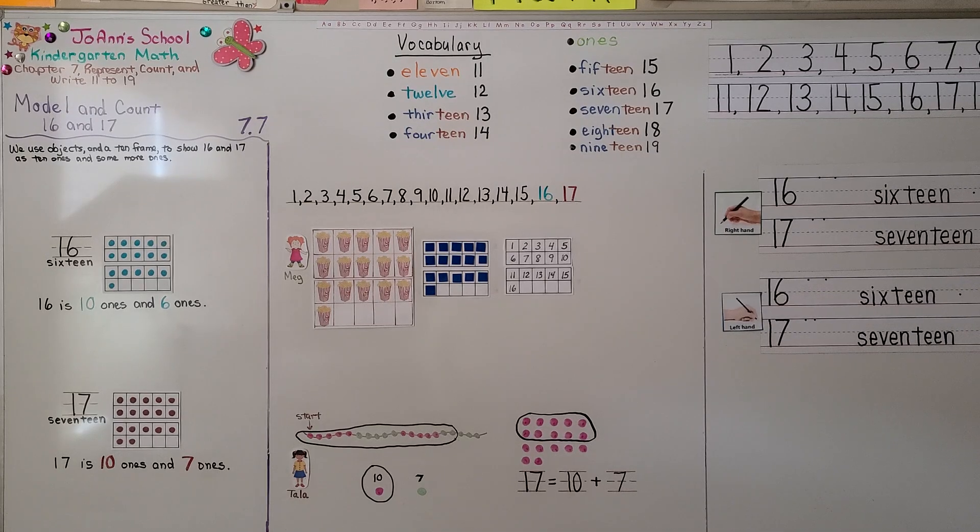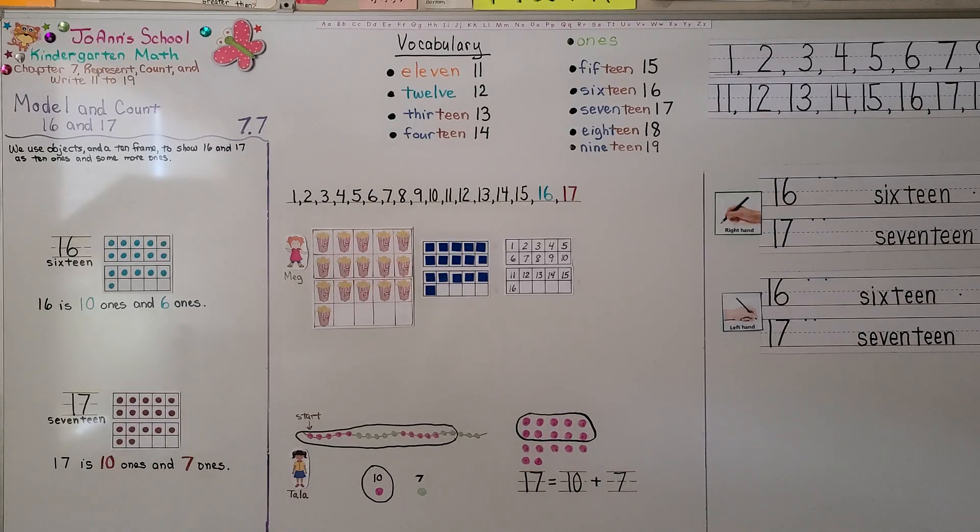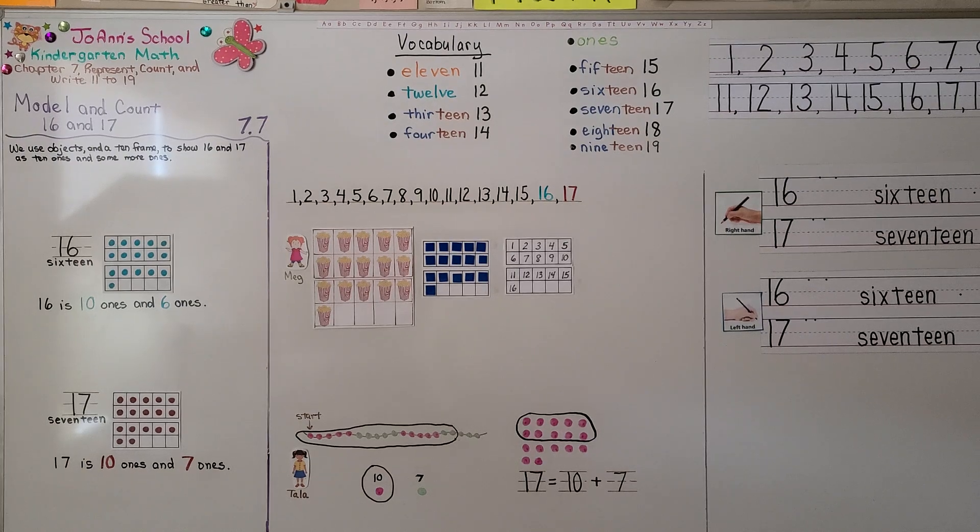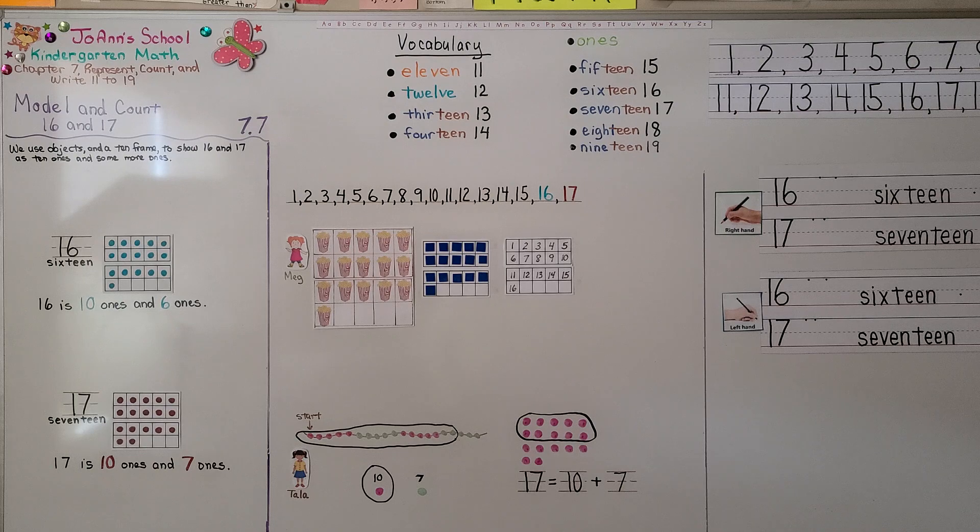Remember to be very careful counting. And remember that 10 and 6 more is 16 and 10 and 7 more is 17. In our next lesson, 7.8, we're going to count and write 16 and 17 with our right and left hands. I'm so proud of you for watching math videos and I hope you'll join me for the next lesson. Bye.